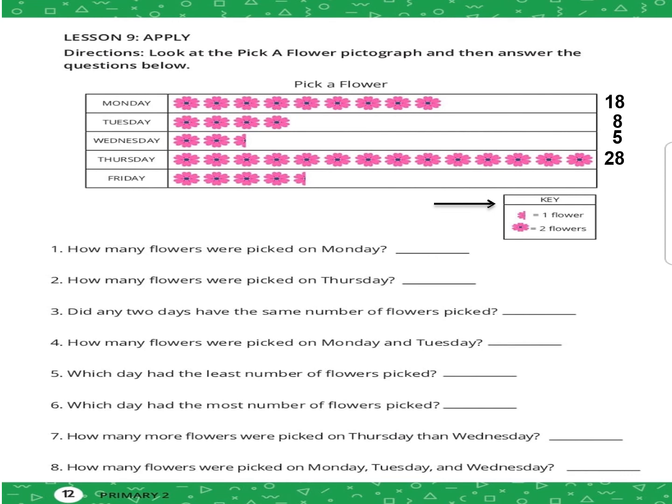How many flowers were picked on Friday? Nine. Question number one: how many flowers were picked on Friday? Eighteen.